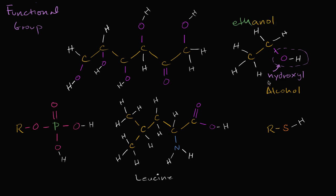What are the properties here? You have oxygen, which is very electronegative, bonded to a hydrogen and a carbon. The oxygen is a lot more electronegative than the hydrogen, so you're going to have a partially negative charge at the oxygen end and a partial positive charge at the hydrogen end. Hydrogen is even less electronegative than carbon. So a hydroxyl group is polar, and because it's polar, you can dissolve it in water — it is hydrophilic. It can form hydrogen bonds.